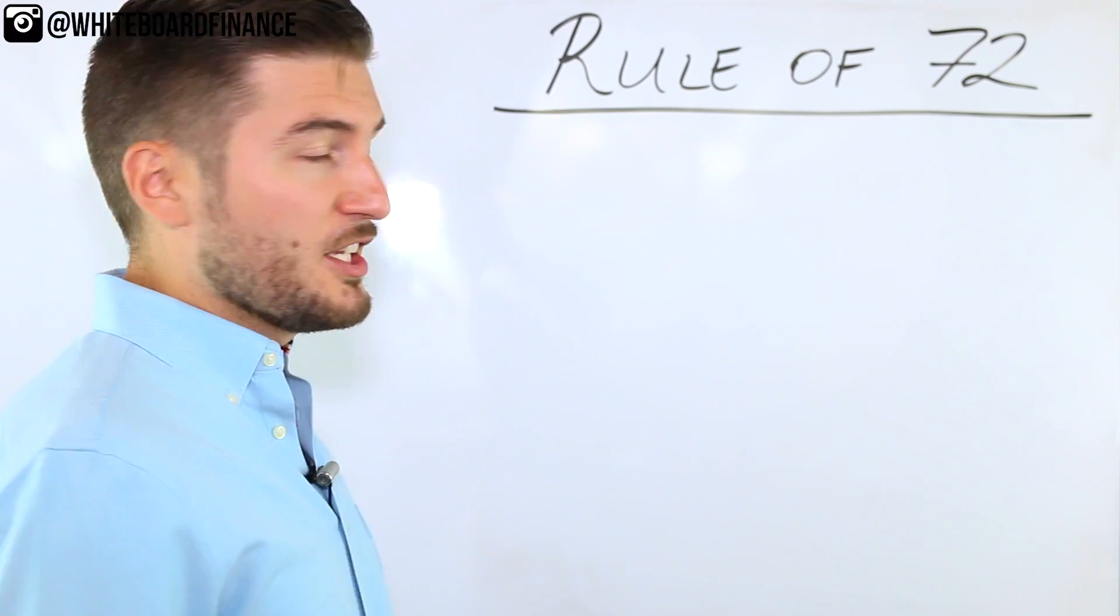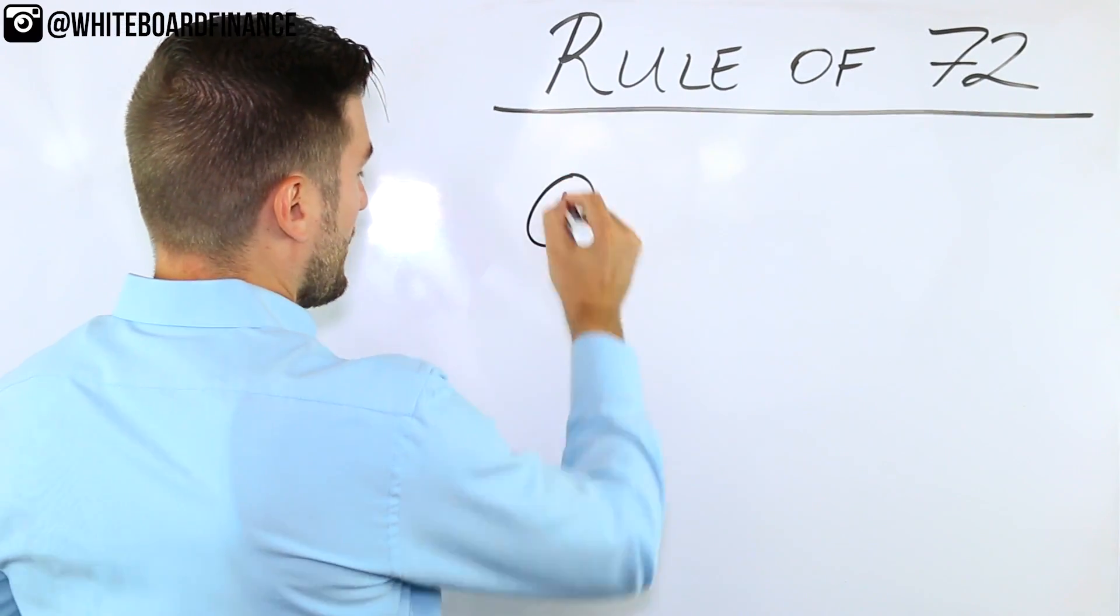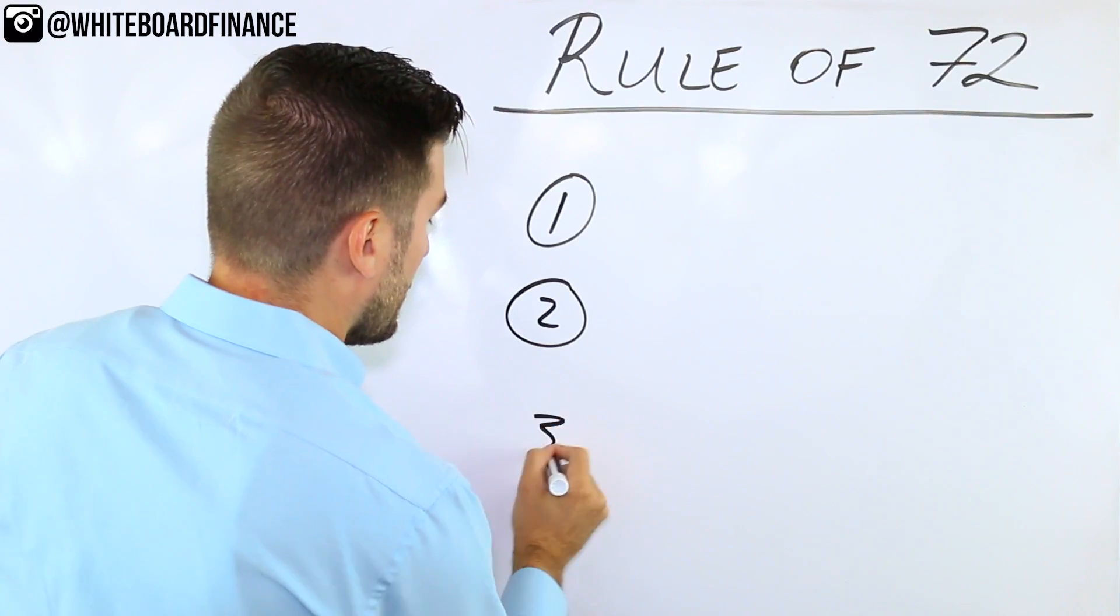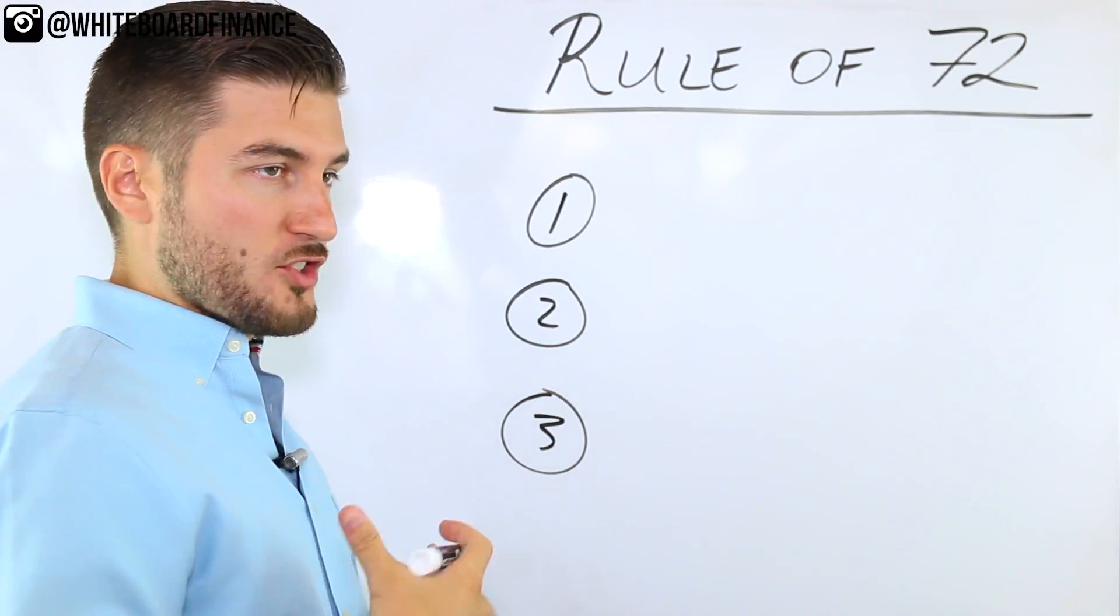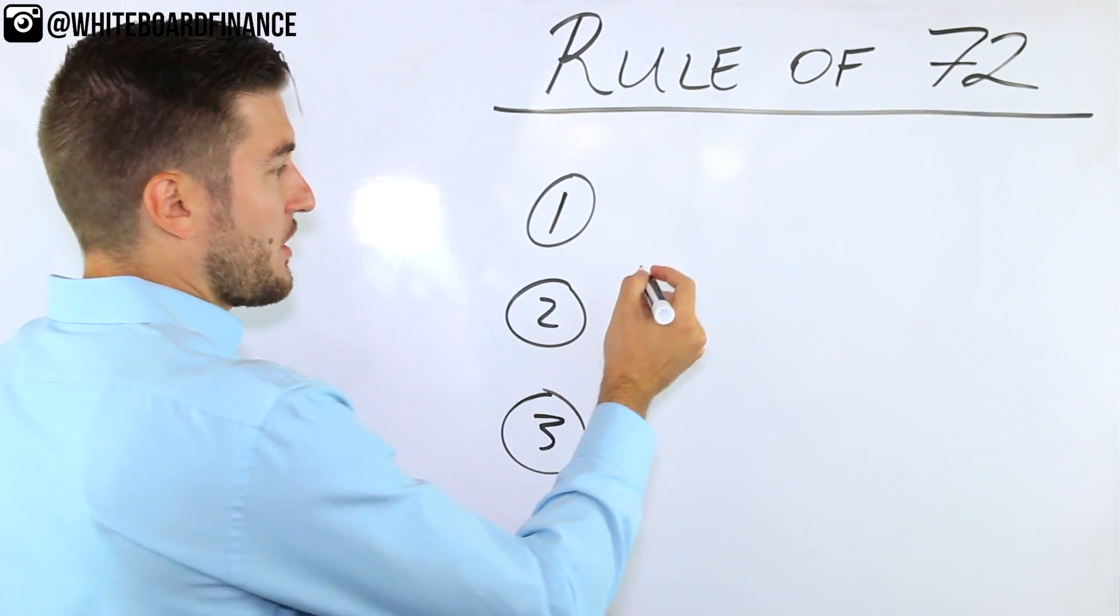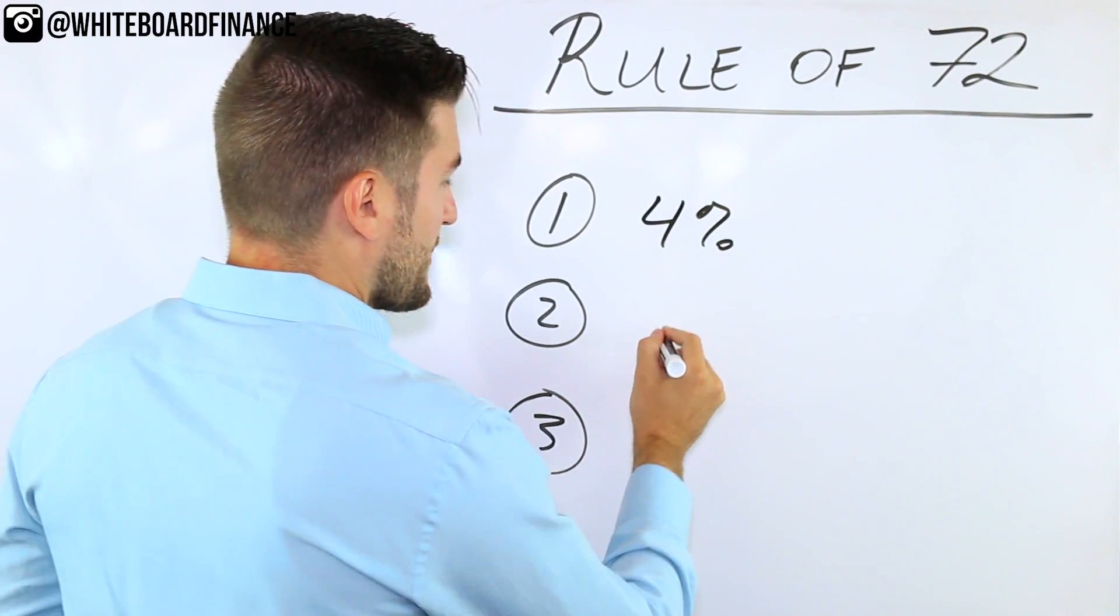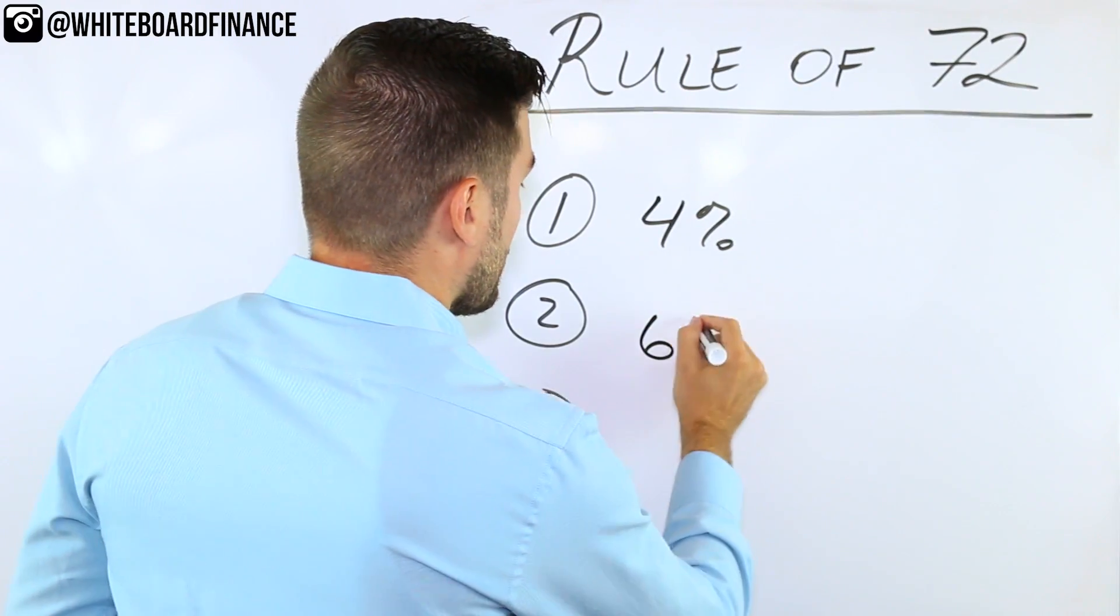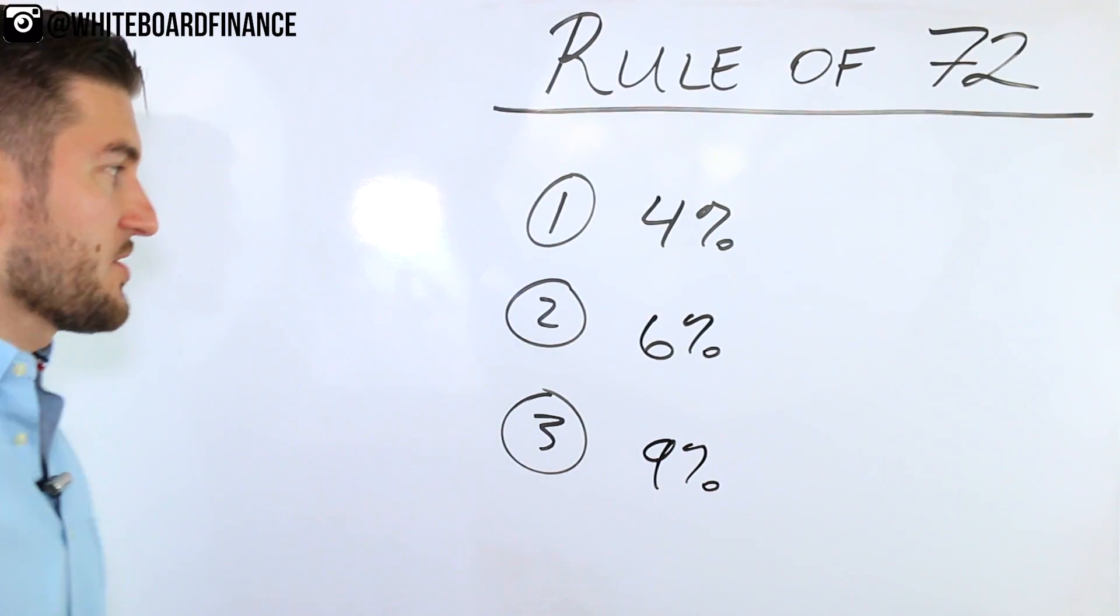So to use this calculation, let me show you three potential investments. You have investment one, you have investment two, you have investment three. So these are all guaranteed annual rates of return. Let's just pretend that we have a crystal ball. The first investment is giving you 4%. The second investment is giving you 6% and the third investment is making you 9% annually.